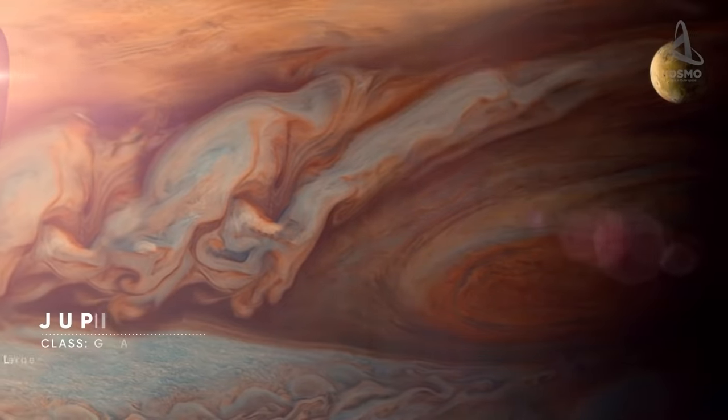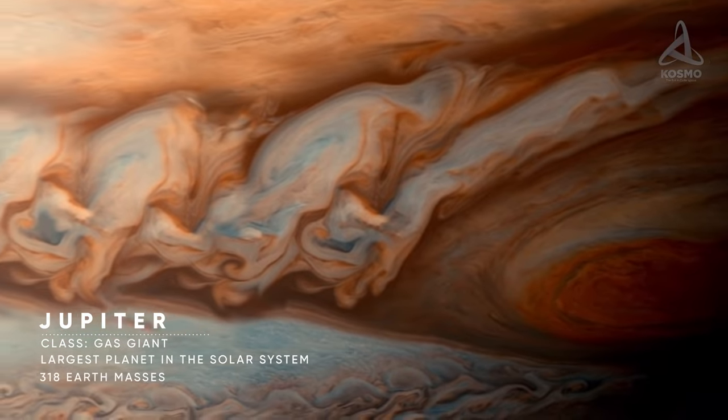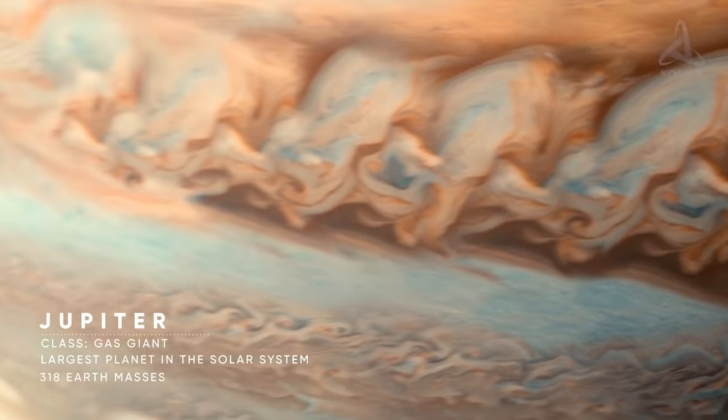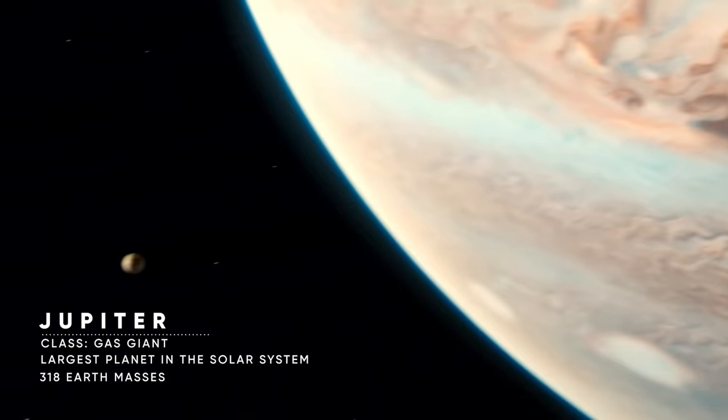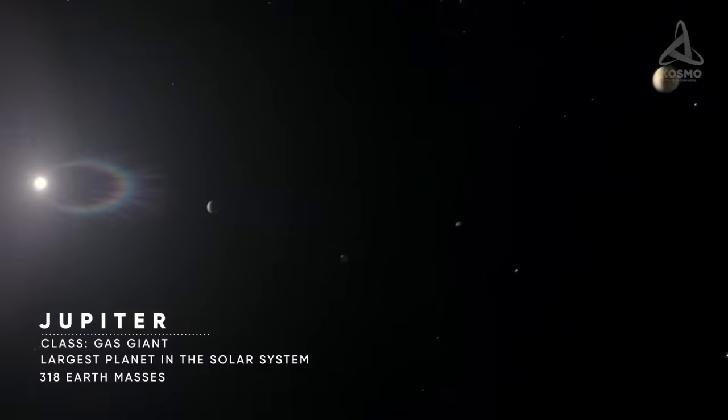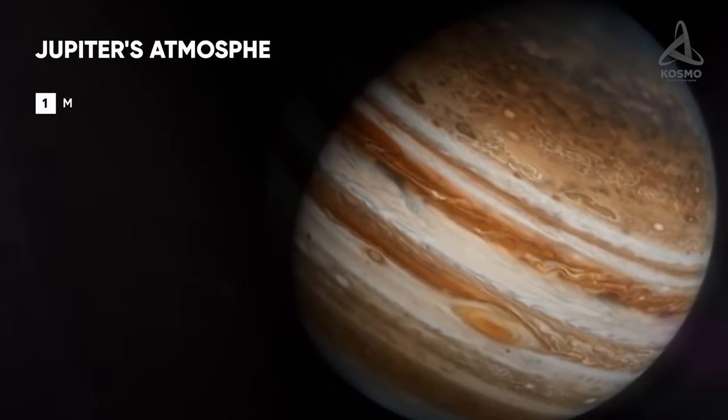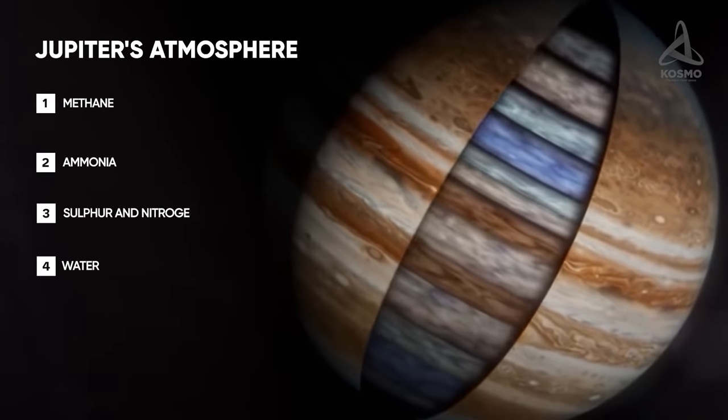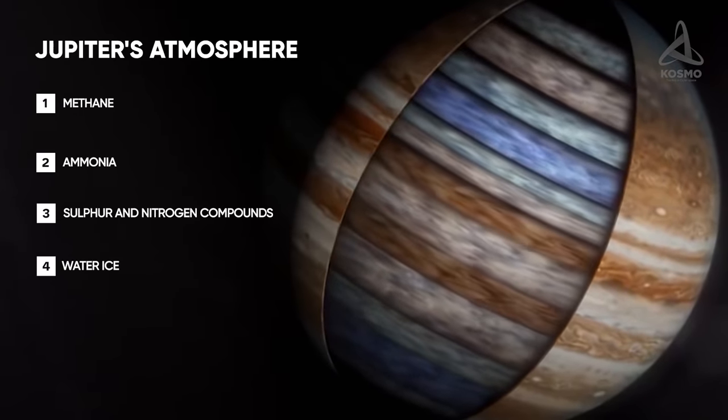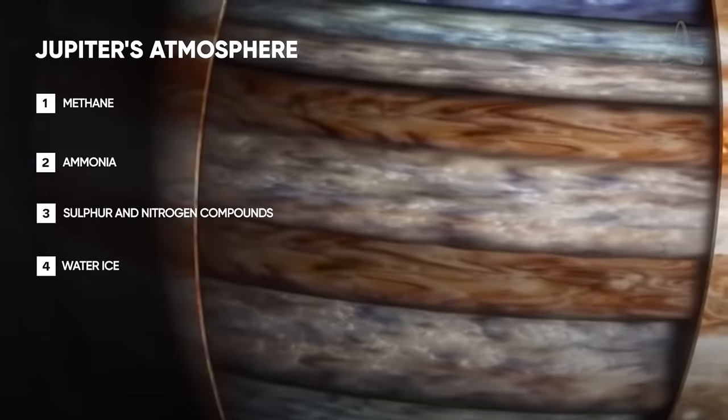Jupiter is the largest planet in the solar system. Its mass is 318 times that of the Earth. This is a gas giant, made up mostly of hydrogen and helium. Apart from these, methane, ammonia, sulfur and nitrogen compounds and water ice have been detected in its atmosphere.